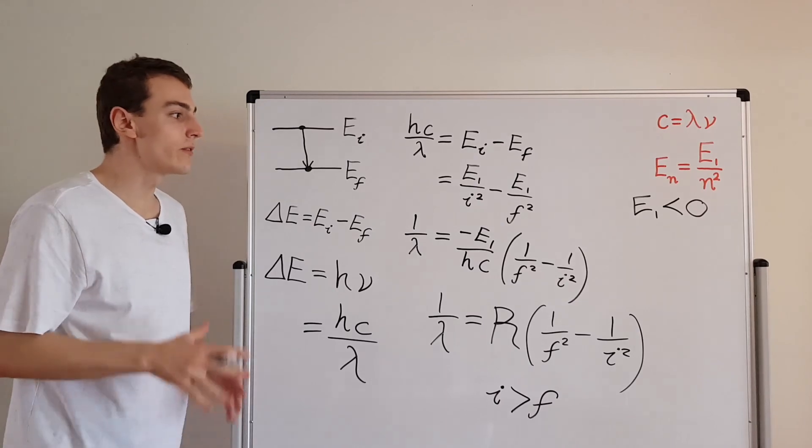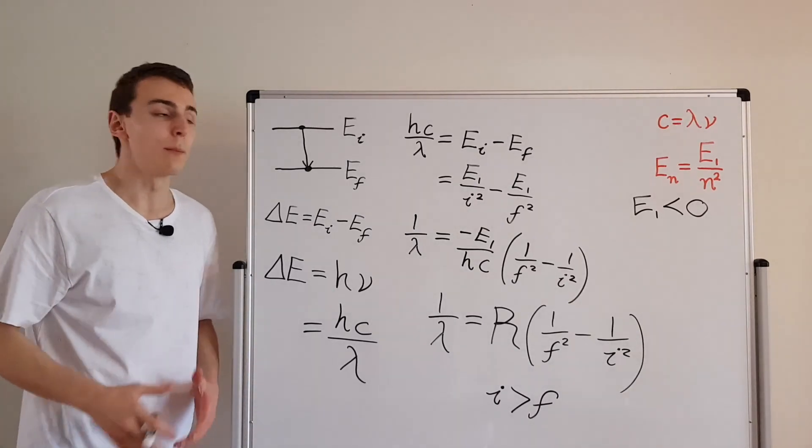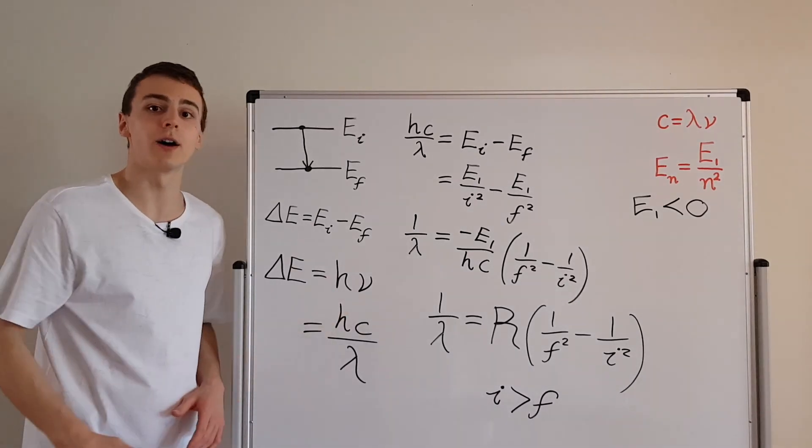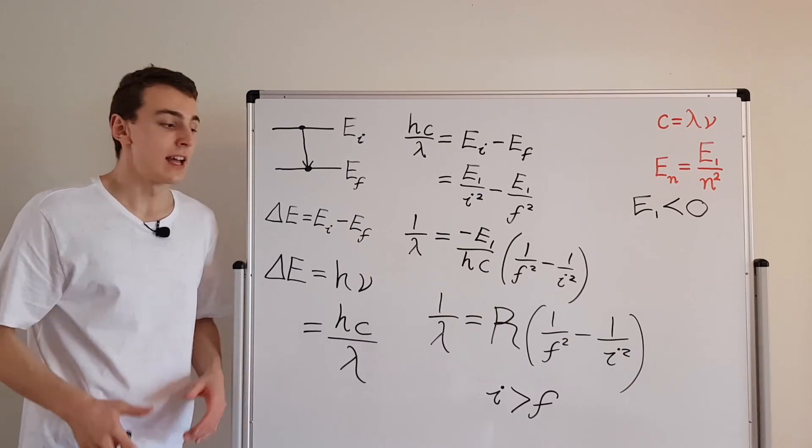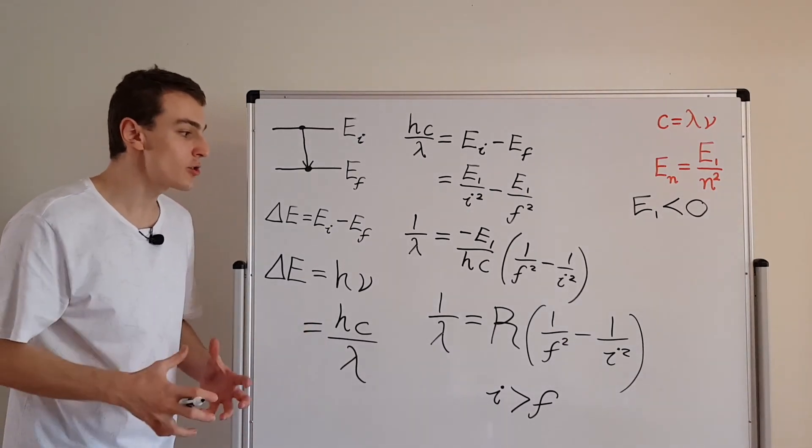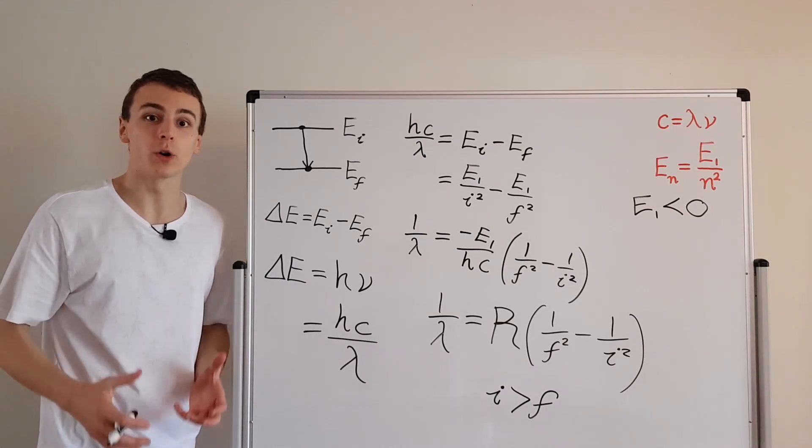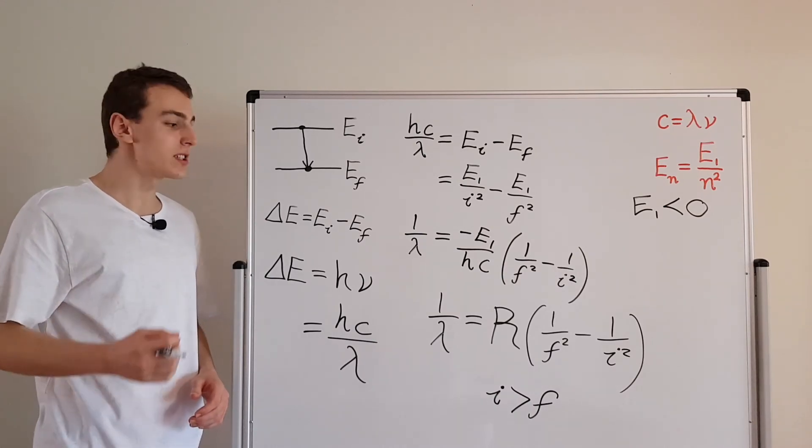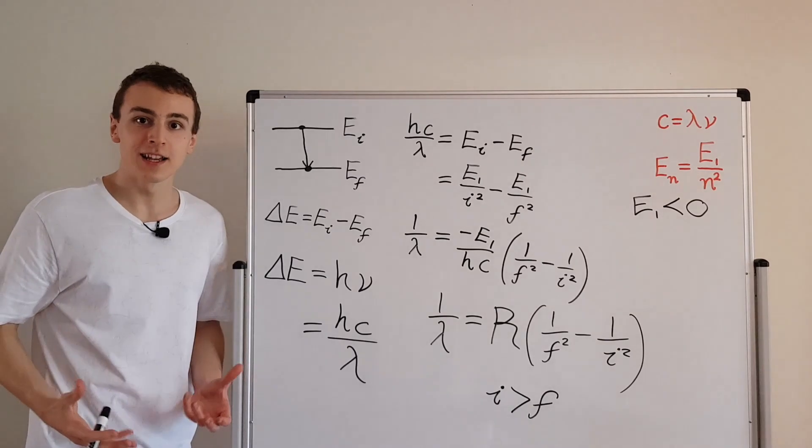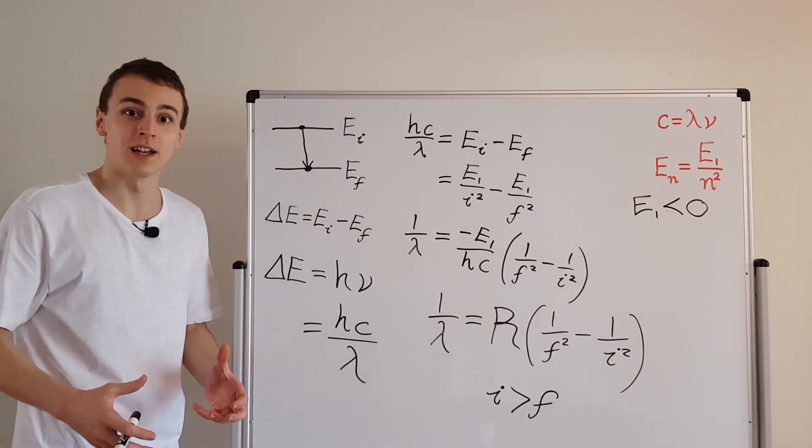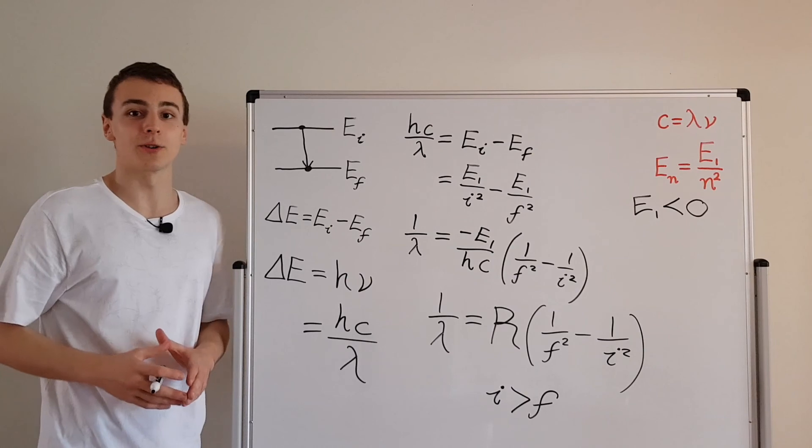So in this video, we have derived the Rydberg formula based on some of the previous stuff that we've talked about in other videos. This Rydberg formula is a tangible way that you can see Bohr's model actually predicting real-world results. It's one of the first times quantum mechanics actually predicted real-world results with stunning levels of accuracy.